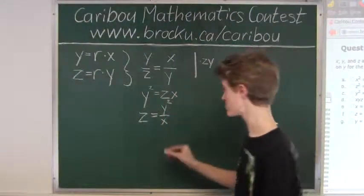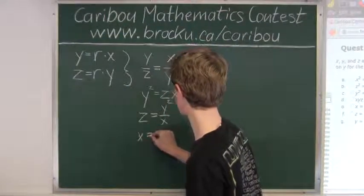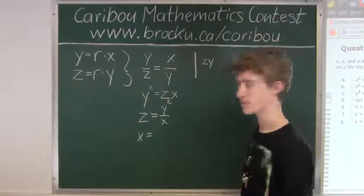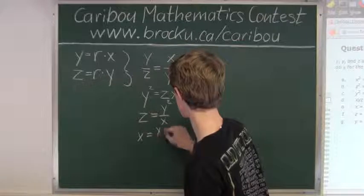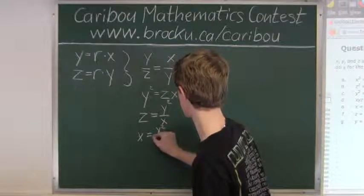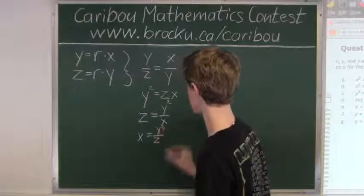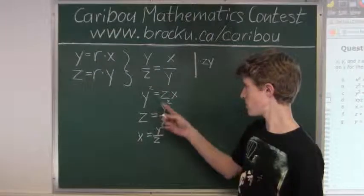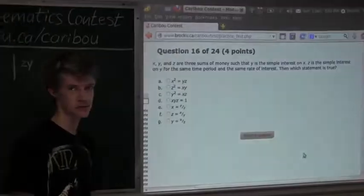And to solve for X, we will divide both sides by Z, so Y squared over Z. So now we have relations in terms of X, Y, and Z. Now let's take a look at the options.